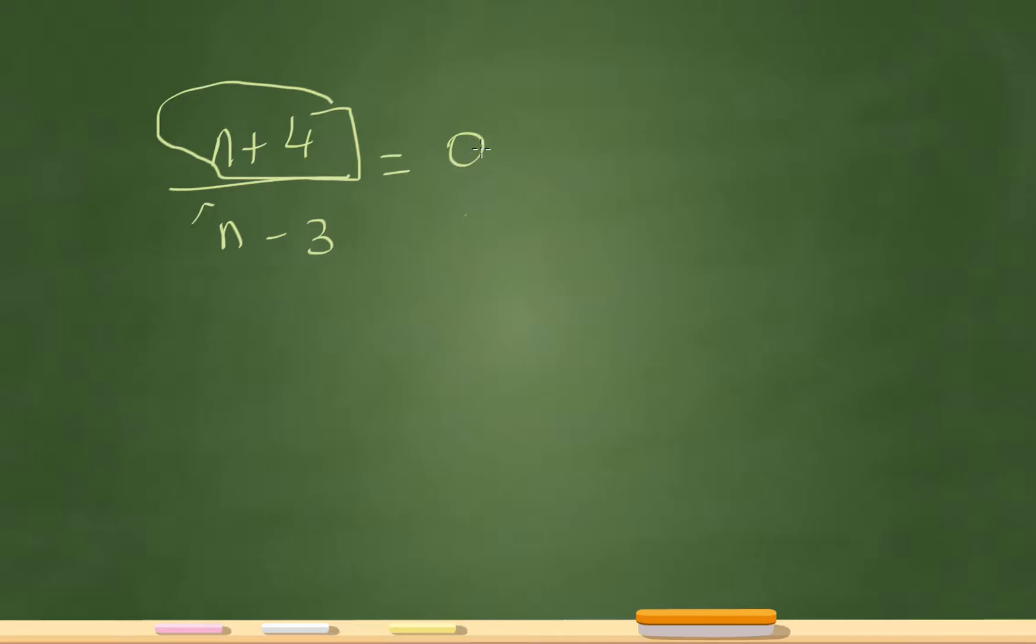So my answer here is negative 4, but hold on before you exit out this video, let's talk about this a little more. Now if I had a 0 in the denominator and n was 3, then that would give me an undefined number.